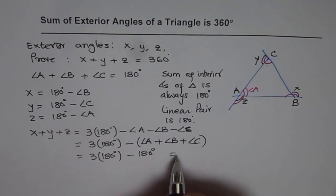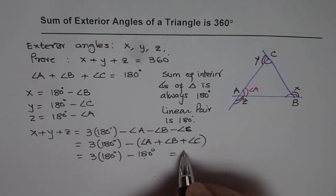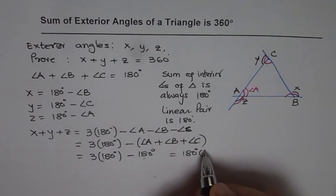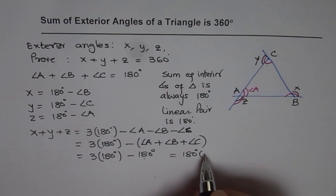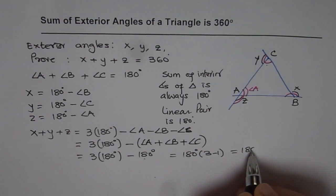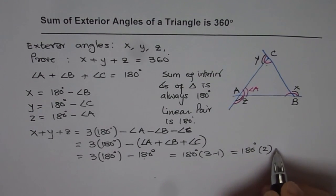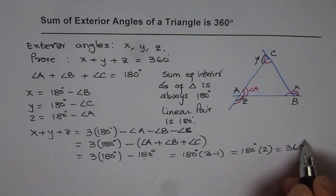So that gives us, if I take 180 degrees common, I get 3 minus 1, which is 180 degrees times 2, which is 360 degrees.